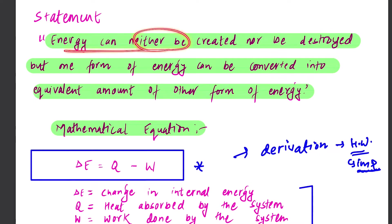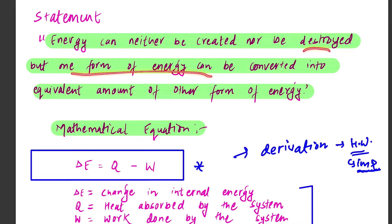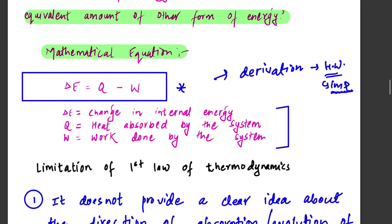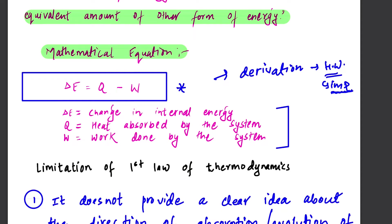The energy can neither be created nor be destroyed, but one form of energy can be converted into an equivalent amount of another form of energy. We can see the mathematical equation as well. There is a change in internal energy equal to the heat absorbed by the system minus work done by the system.